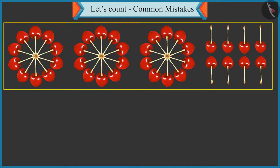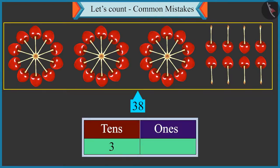Oh, Chotu, there are thirty-eight cherries in total. Thirty-eight means three tens and eight ones.